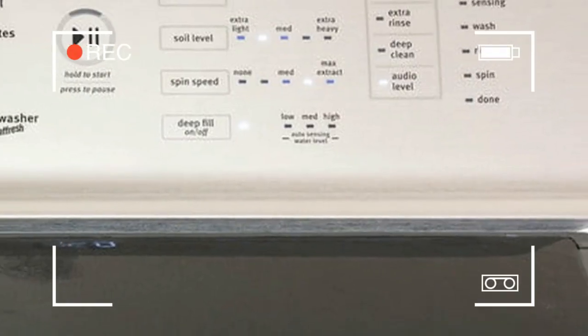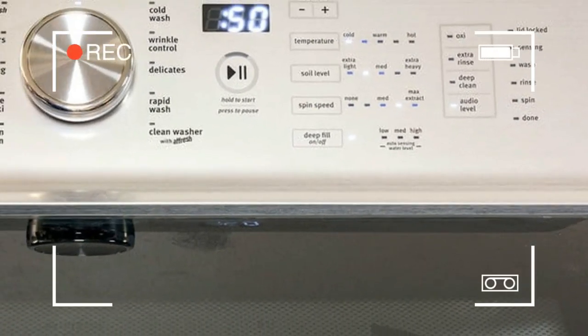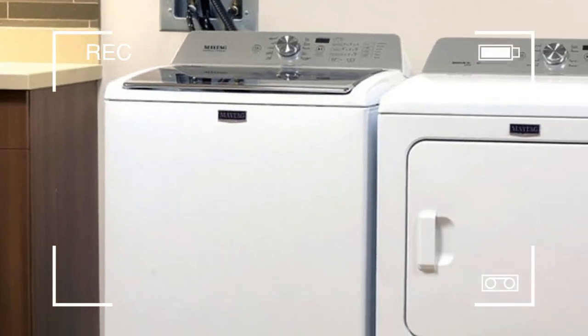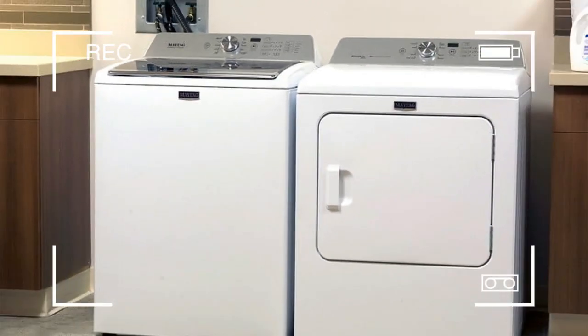The Maytag boasts a capacity of 4.7 cubic feet and measures 42 by 27.5 by 27 inches: height, width, depth.